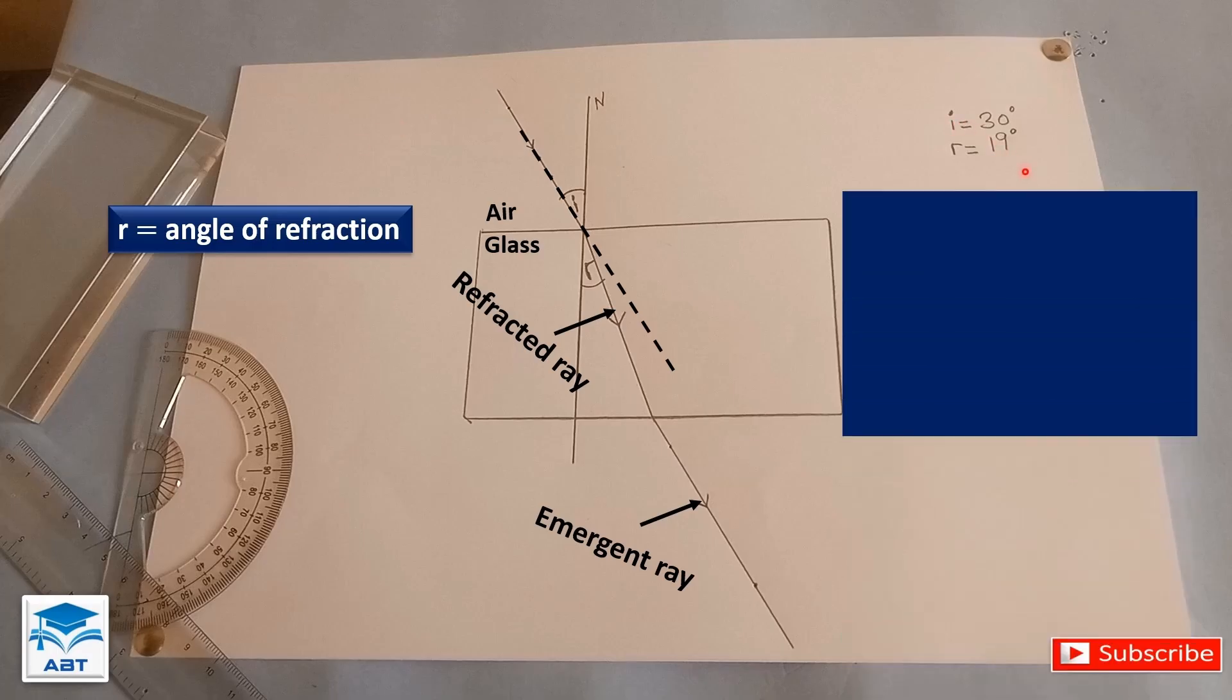Now we have an angle of incidence of 30 degrees and angle of refraction of 19 degrees. And we are going to find sine of the angle of incidence divided by sine of the angle of refraction and we are representing it with mu, that is the refractive index. And so we have sine 30 degrees divided by sine 19 degrees which gives 1.5 to 1 decimal place.